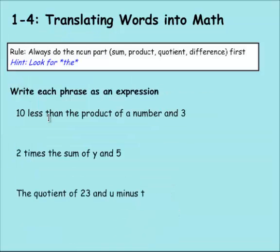Let's look at these ones. We have 10 less than the product of a number and 3. See the word 'the'? The product of a number and 3. That's a multiplication problem. N times 3, or 3N, and then 10 less than that. So we're taking away 10 from that: 3N minus 10. Remember, less than is always a tricky one.